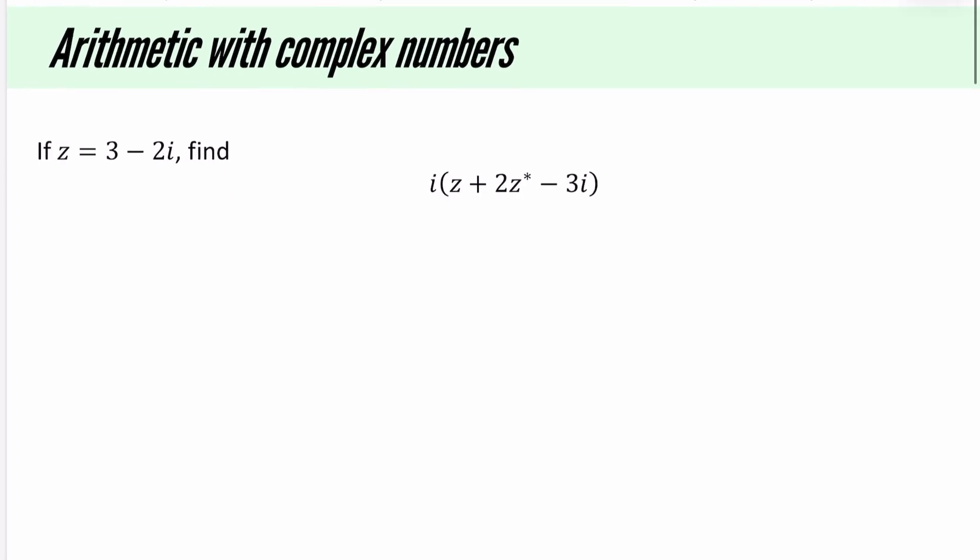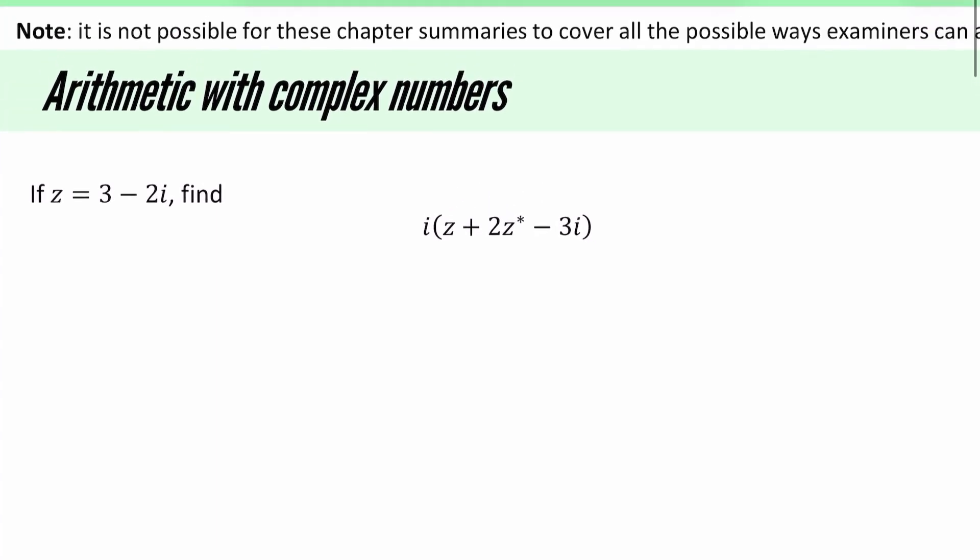Let's start off with some questions like this. It says here that if z is 3 minus 2i, find this thing, which is i brackets z plus 2 times by z conjugate minus 3i. I'm actually just going to go straight in and just start substituting some things in. So z is 3 minus 2i. When I do the z conjugate, it's going to be a 3 plus 2i.